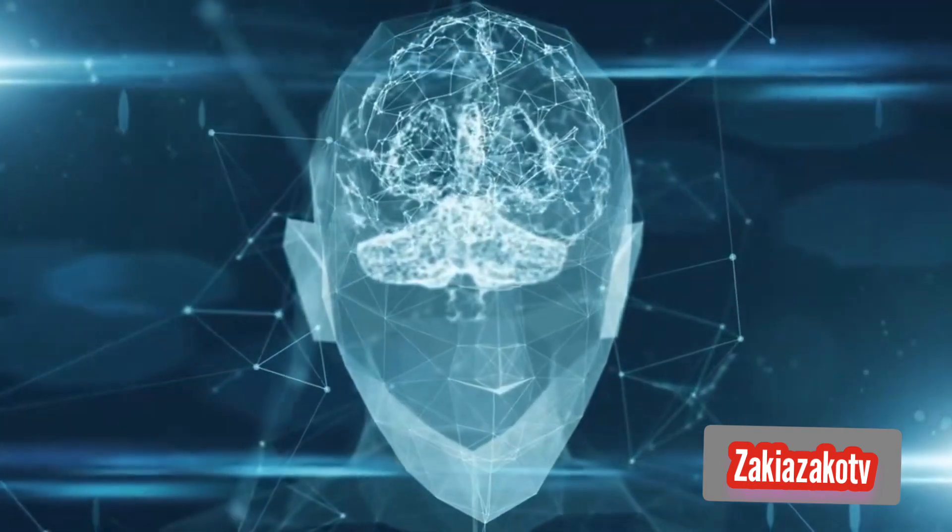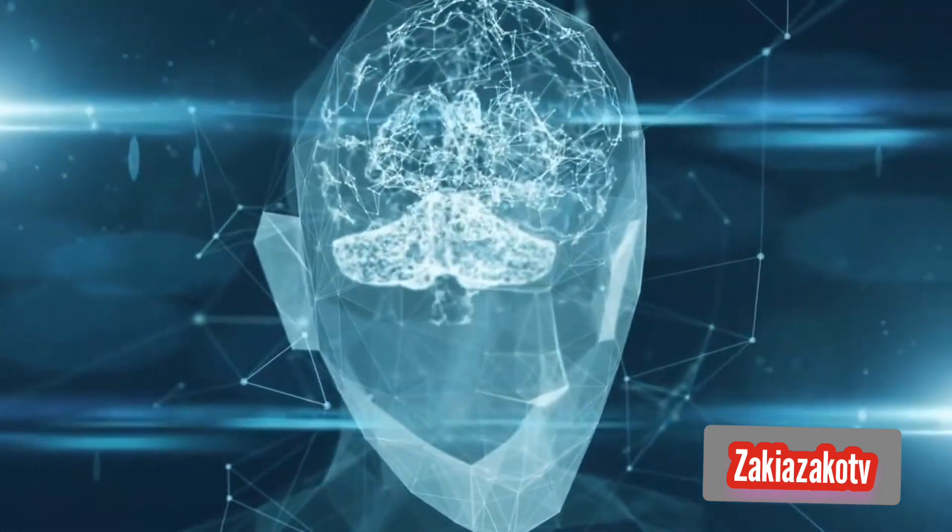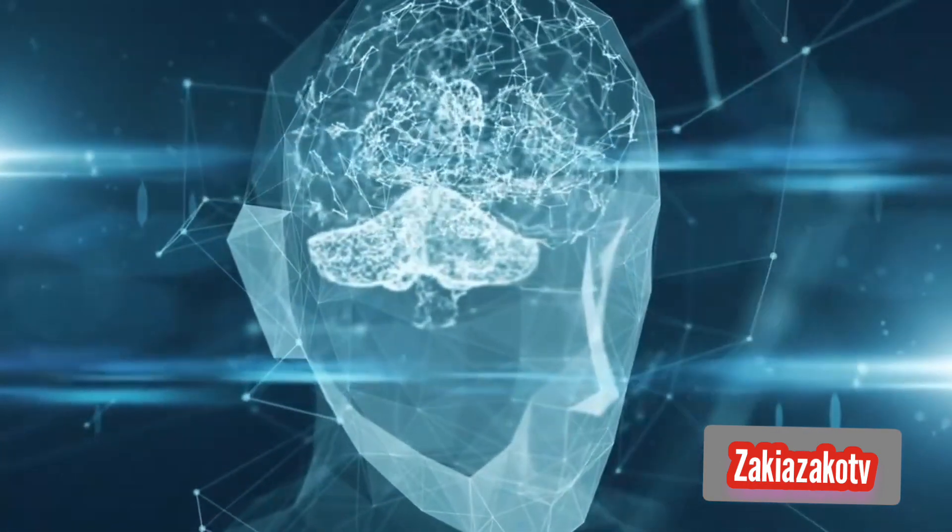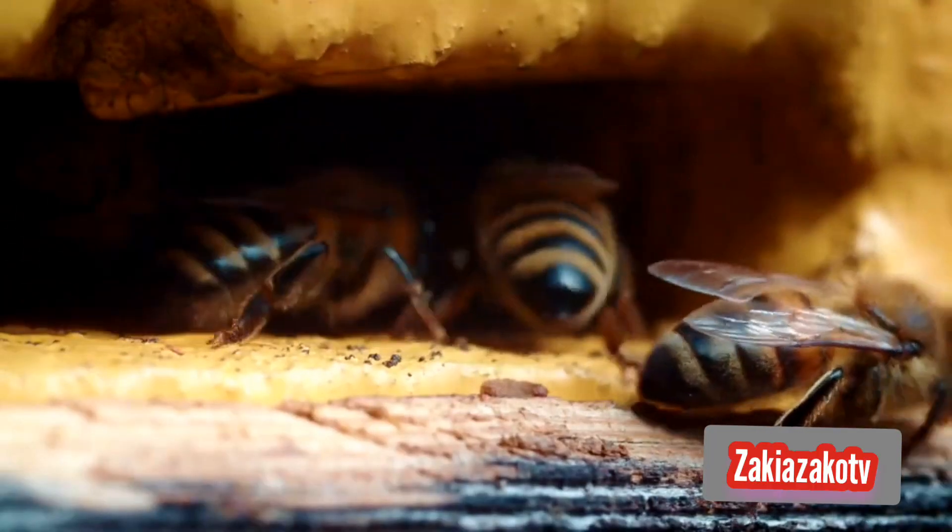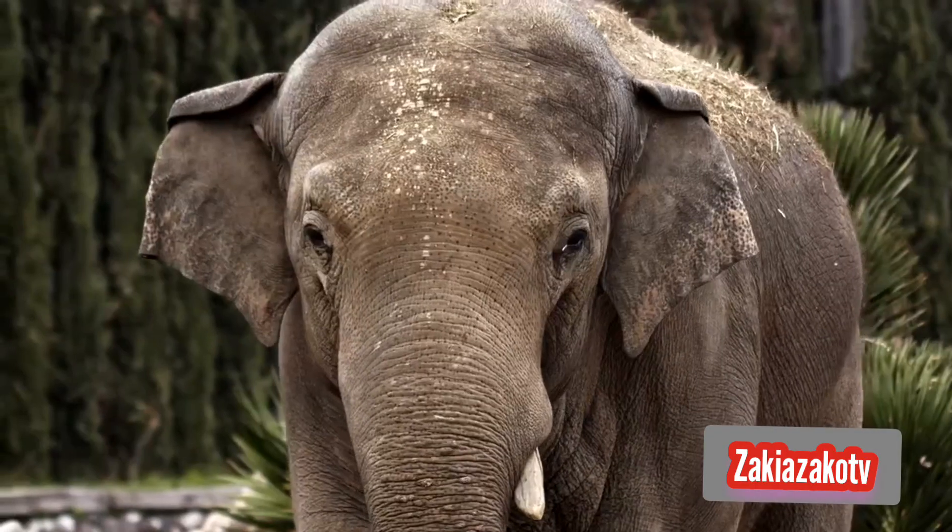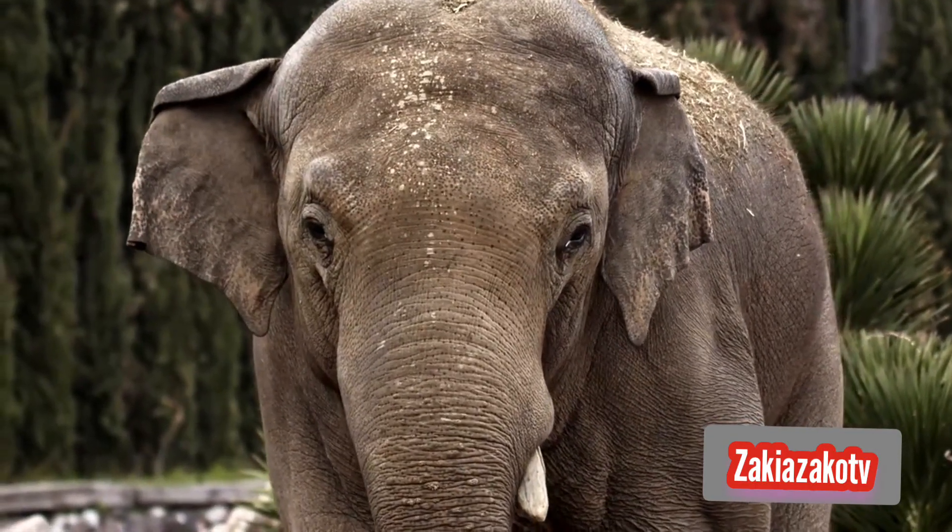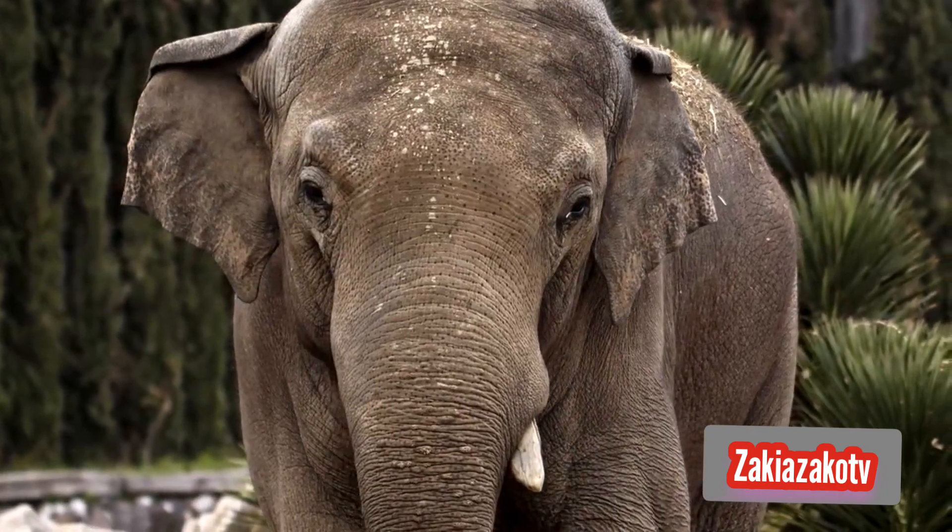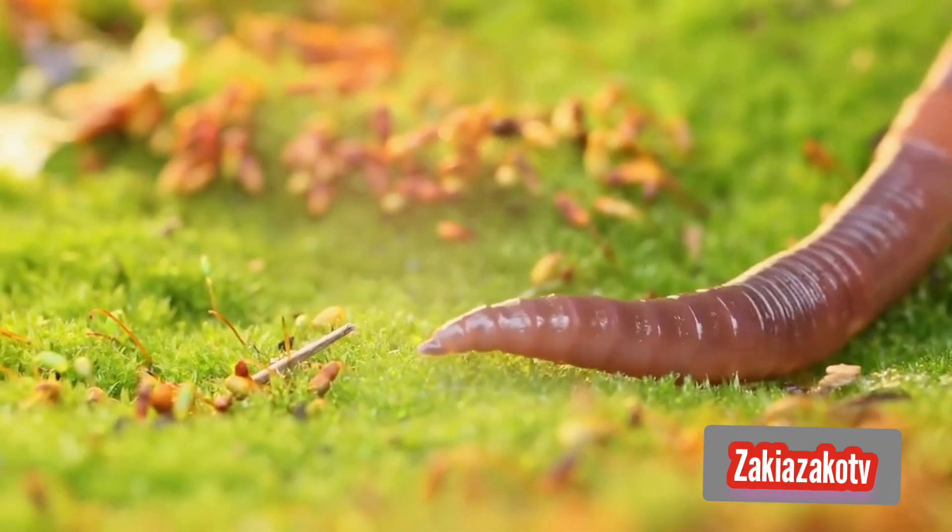In this view, consciousness is not a hard line, but a gradient, and many animals possess conscious traits. For example, bees showcase the ability to communicate information and remember faces from photographs. Elephants can remember people and hold grudges against individuals who have harmed them. Even earthworms are smarter than people assume.